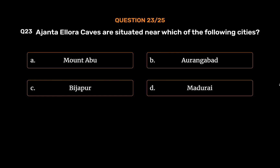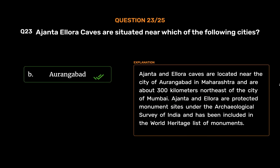The correct answer is Option B: Aurangabad. Ajanta and Ellora Caves are located near the city of Aurangabad in Maharashtra and are about 300 km northeast of the city of Mumbai. Ajanta and Ellora are protected monument sites under the Archaeological Survey of India and have been included in the World Heritage List of Monuments.